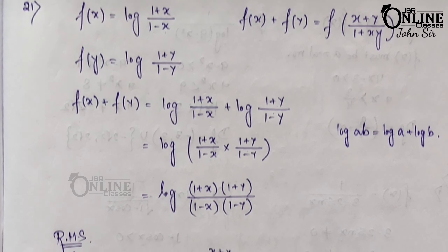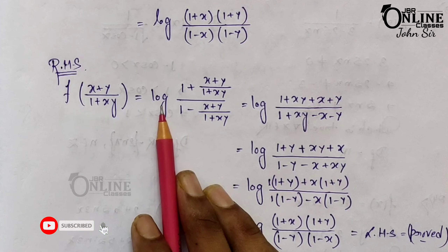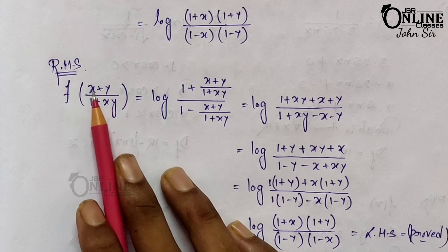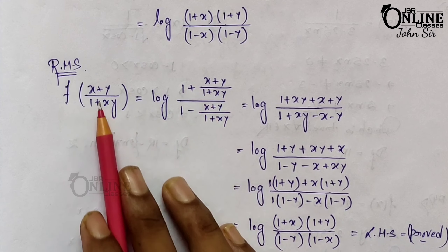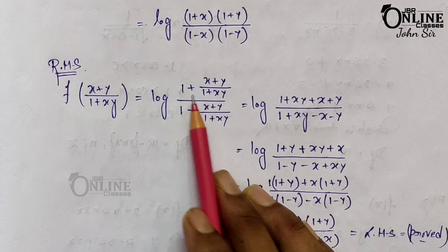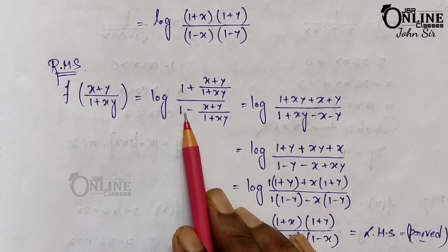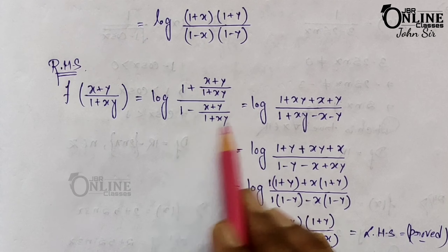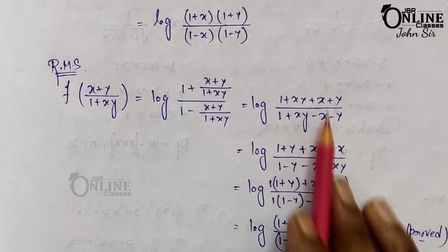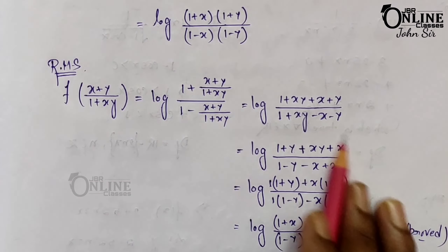Now we have to prove from the right hand side. Here f((x+y)/(1+xy)) — so log of the whole function where x is replaced by (x+y)/(1+xy). The numerator becomes 1 plus (x+y)/(1+xy) and the denominator 1 minus (x+y)/(1+xy). Taking LCM as (1+xy): numerator is (1+xy+x+y) and denominator is (1+xy−x−y). The (1+xy) cancels out after addition and subtraction.